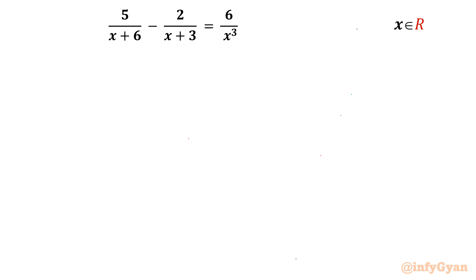Welcome back to Infigyan, my dear friends. Today we are going to solve one very interesting rational equation. The given equation is 5 over (x+6) minus 2 over (x+3) equal to 6 over x³. We have to find out real values of x. So let us get started.